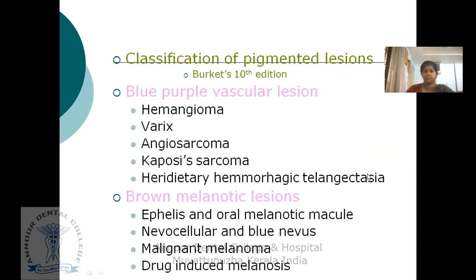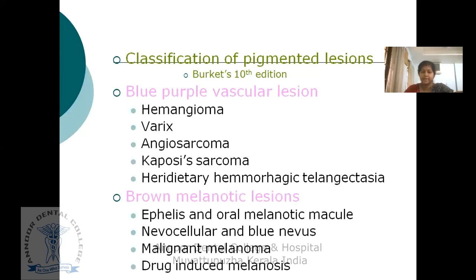There are many classifications based on pigmentation. Two important ones are easy to follow. The first is Burkitt's classification, which is based upon the color of the lesion. Blue-purple vascular lesions include hemangioma, varix, angiosarcoma, Kaposi's sarcoma, and hereditary hemorrhagic telangiectasia.